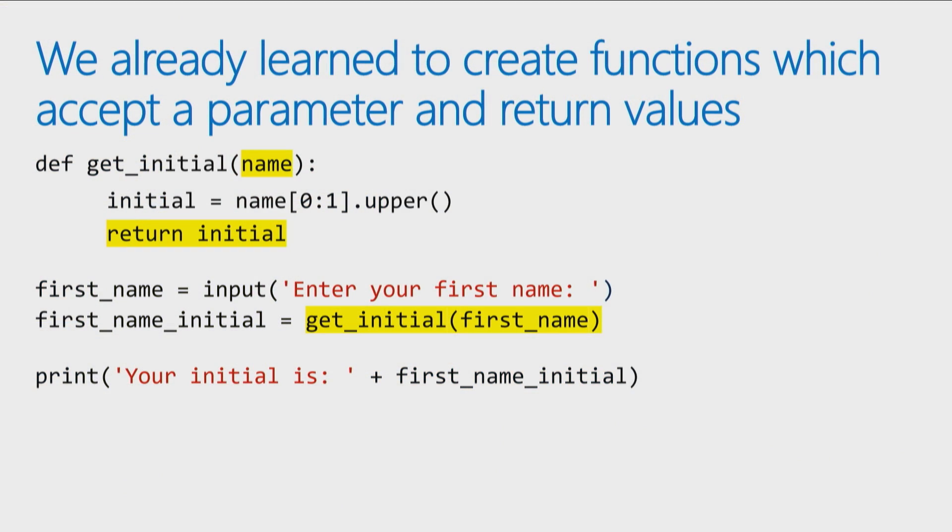You already saw that we can create a function which accepts a parameter and that can return values. So just to review, we created a function here called getInitial. When you call getInitial, you pass in a name. So here we have the call in our code that's calling getInitial, and it passes in the first name.